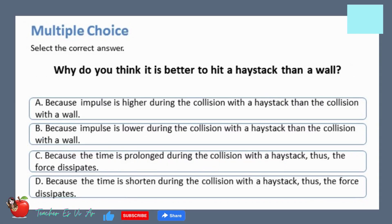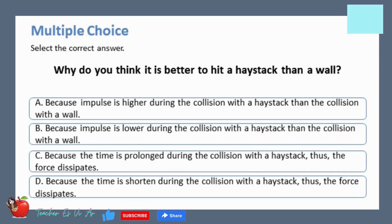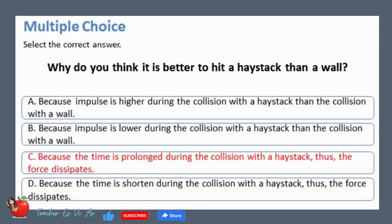Multiple choice — select the correct answer. Why do you think it is better to hit a haystack than a wall? A. Because impulse is higher during the collision with a haystack than with a wall. B. Because impulse is lower during the collision with a haystack than with a wall. C. Because the time is prolonged during the collision with a haystack, thus the force dissipates. D. Because the time is shortened during the collision with a haystack, thus the force dissipates. The correct answer is C: because the time is prolonged during the collision with a haystack, thus the force dissipates.